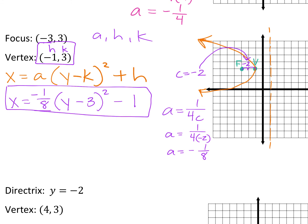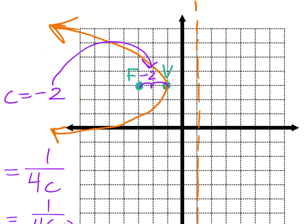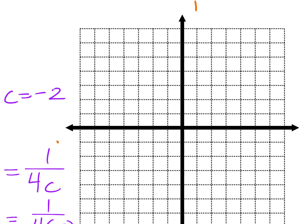Always make sure you're starting with the right thing — x or y equals. If it's opening left and right, x equals. If it's opening up and down, y equals. And make sure you flip your H and K if it's an x equals setup. We were given a vertex at (-1, 3) and a focus at (-3, 3). From the vertex, you have to wrap around the focus — so my parabola has to go like this. The focus should always be inside of your parabola.